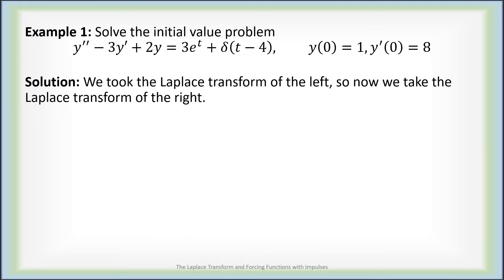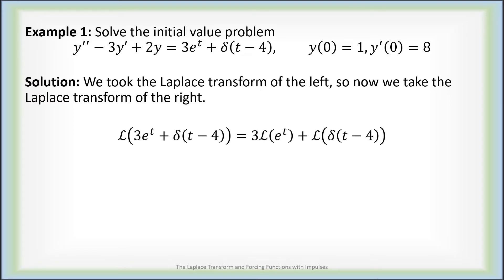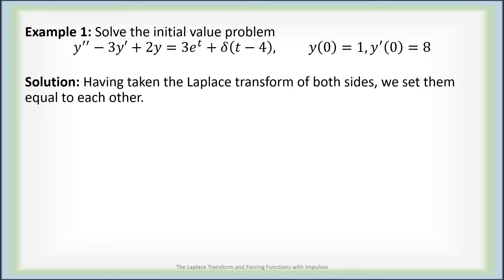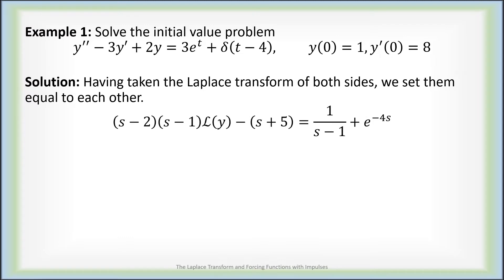What about taking a Laplace transform of the right-hand side? Again we use linearity and split this up as a sum of two different Laplace transforms, factoring out that 3. The Laplace transform of e to the t is just 1 over s minus 1, and this is an impulse function at time 4, whose Laplace transform is e to the minus 4s. So we've taken the Laplace transform of both sides and can set them equal to each other.